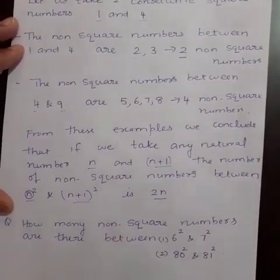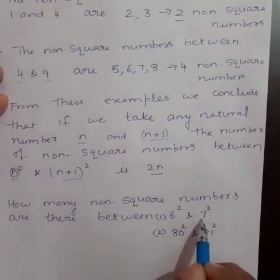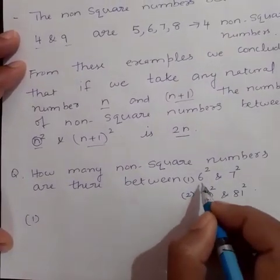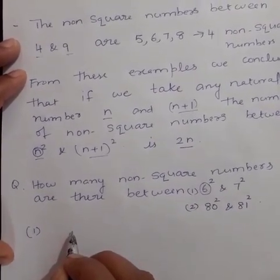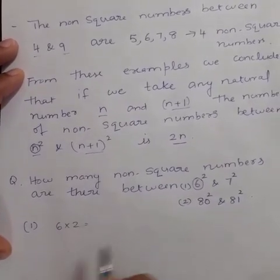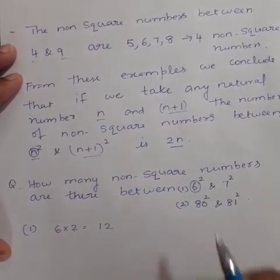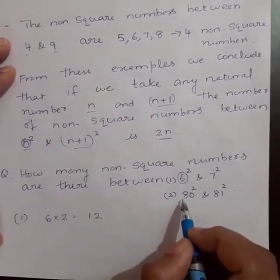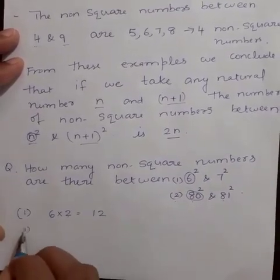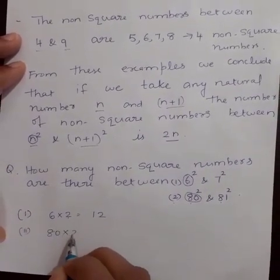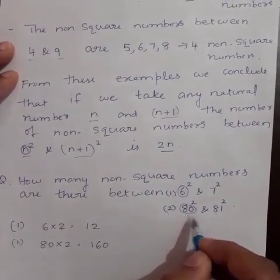Let us solve some questions. How many non-square numbers are there between 6 square and 7 square? We know that here the smaller number is 6, so the non-square numbers between 6 square and 7 square is equal to 6 into 2, that is, multiplying the smaller number by 2, that is equal to 12. How many non-square numbers are between 80 square and 81 square? The smaller number is 80, so we have to multiply 80 by 2, that is equal to 160. So, there are 160 non-square numbers between 80 square and 81 square.